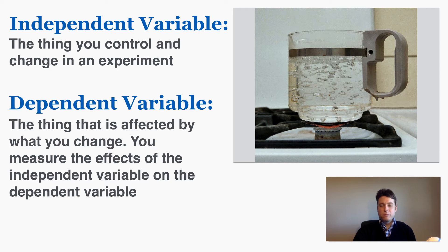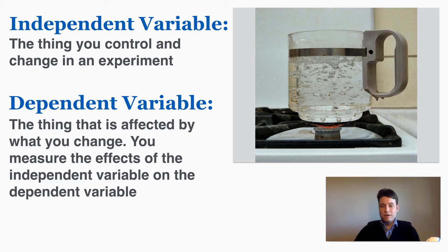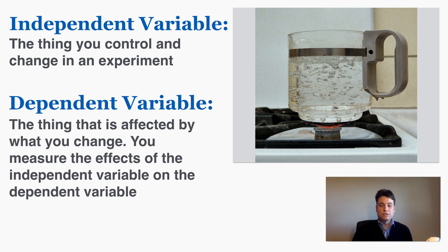The dependent variable here would be the time that it takes for the water to boil. That's affected by the heat — it's affected by the independent variable. So if there's more heat you would expect the water to take less time to come to a boil. Because that time depends on your independent variable we would say that that's the dependent variable, and it's also the dependent variable because it's what you're measuring in an experiment. You're analyzing the time that water takes to boil and so that would be the dependent variable.